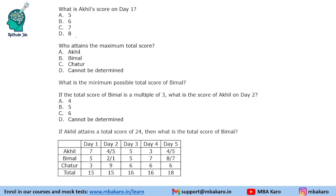What is Akhil's score on day 1? We can uniquely find his score as 7. Who attains the maximum total score? Chatur's total is 30. Akhil's maximum possible is 7 plus 5 plus 5 plus 3 plus 5, which is 25, and Bimal's maximum is 27. So no one can match Chatur's total of 30, and Chatur attains the maximum total score.